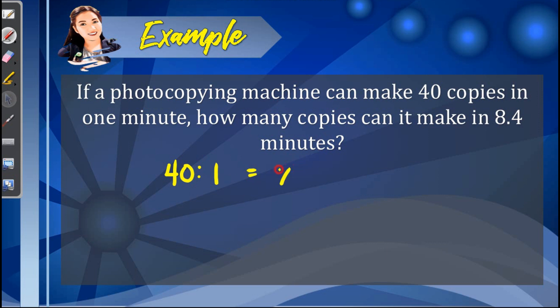Equals the number of copies to 8.4 minutes. Take note that in writing the ratios in a proportion, make sure that you are following the same order. So if in your first ratio you have copies to minute, on your other ratio it should also be copies to minute, or else your proportion is wrong. So here we have the product of the extremes, which is 336, equals x. So it means to say that the photocopying machine can have 336 copies in 8.4 minutes.